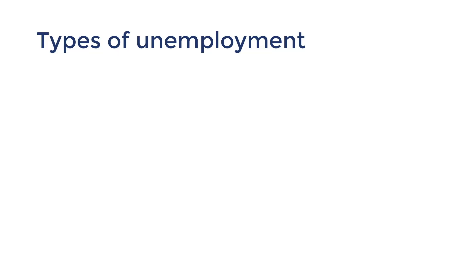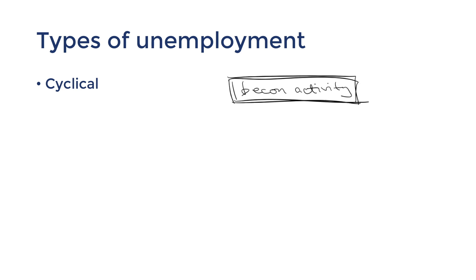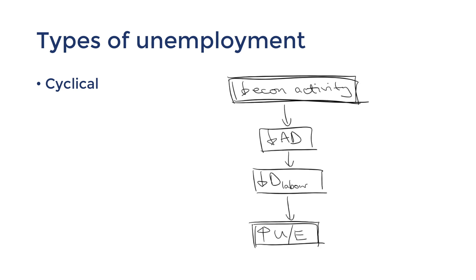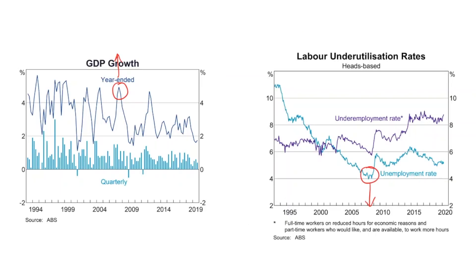I'll be supporting this lesson with lots of examples. The most observable type of unemployment is cyclical unemployment. This is unemployment caused by downturns in the economy. This happens because falling economic activity is associated with less spending or aggregate demand, which leads to lower demand for labour. You can observe this as the unemployment rate often increases when the GDP growth rate is lower. Governments often try to reduce cyclical unemployment by using expansionary macroeconomic policy, as this would increase aggregate demand and in turn increase the demand for labour.